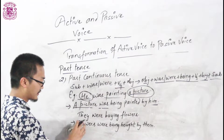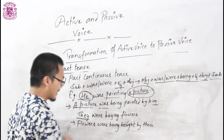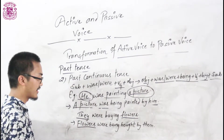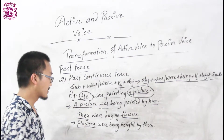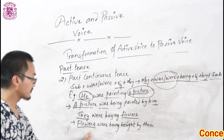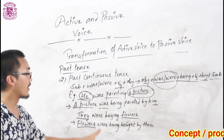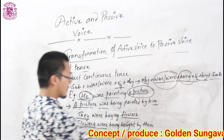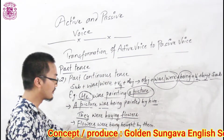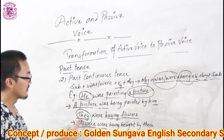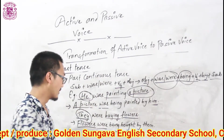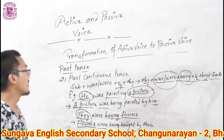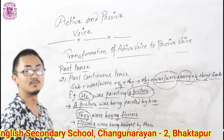Let's see another example: 'They were buying flowers.' Here 'they' is used as subject and 'flowers' is used as object. While using 'flowers' as subject, we write it the same. 'Flowers' is plural and plural takes 'were', not 'was'. So: 'Flowers were being' — then V3. The V3 of 'buying' is 'bought'. So: 'Flowers were being bought by them.' While changing 'they' into object, we change 'they' into 'them'. In this way you can change the structure of past continuous tense into passive voice easily.